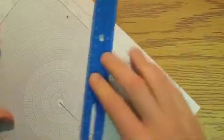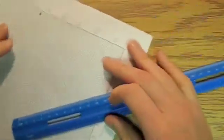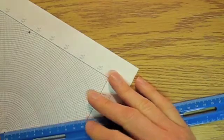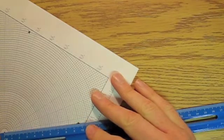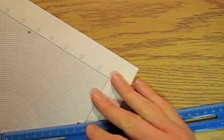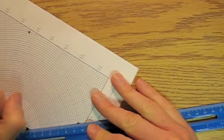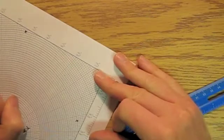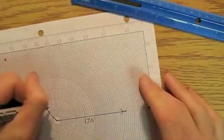And so I'm going to label that 17 newtons. And then over here, I've got my 3.5 centimeter, which would be 7 newtons. So I'm going to come along this line like this, and I'm going to go 3.5 newtons like that. I'm sorry, 7 newtons.